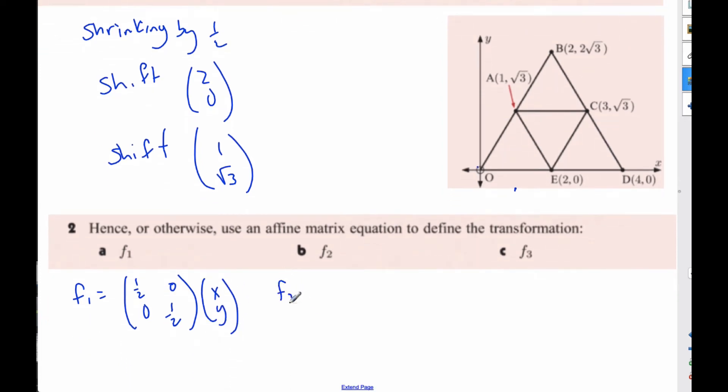F2, well again, it shrinks it down and then shifts it over. So it's shrink (x, y) and then it moves over by this vector (2, 0).